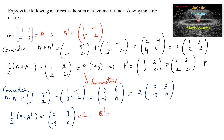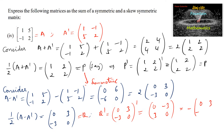Then Q transpose equals [0,3;-3,0] transpose = [0,-3;3,0], and taking negative common we get negative of [0,3;-3,0], which is negative Q. Therefore Q is a skew symmetric matrix.